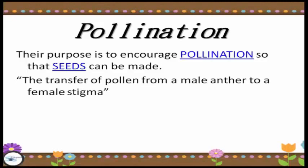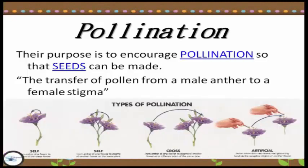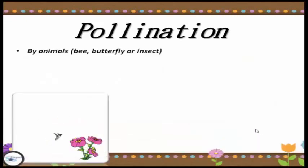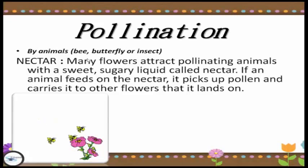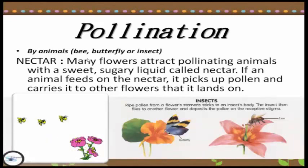Pollination is the transfer of pollen from a male anther to a female stigma. We have four types of pollination: self-pollination within the same flower, self-pollination between two flowers on one plant, cross-pollination and artificial pollination. In artificial pollination, some people manually transfer pollen from one flower to another. Pollination can be caused by animals such as bees, butterflies or insects, which commonly bring the nectar. Nectar is a sweet, sugary liquid that attracts pollinating animals, which feed on it and carry pollen to other flowers.